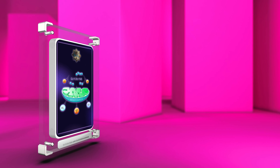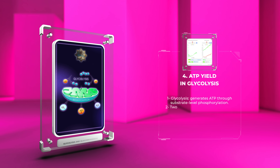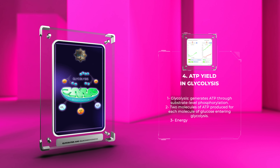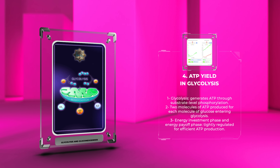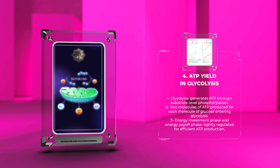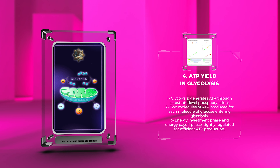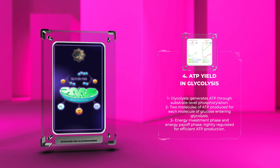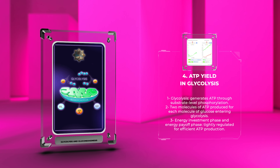Glycolysis generates ATP through substrate-level phosphorylation. For each molecule of glucose that enters glycolysis, two molecules of ATP are produced. The energy investment phase and energy payoff phase of glycolysis are tightly regulated to ensure efficient ATP production while minimizing energy wastage.